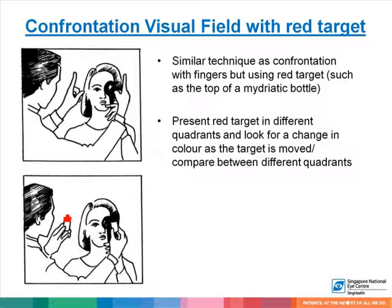A similar technique can be used with a red target, such as the top of a mydriatic bottle. Presenting a red target in four different quadrants and asking for a change in the color of the red target, or asking the patient to compare the red target in different quadrants, helps to pick up more subtle visual field defects that may not have been detected on confrontation visual field testing with finger counting, hand movements, or light perception.